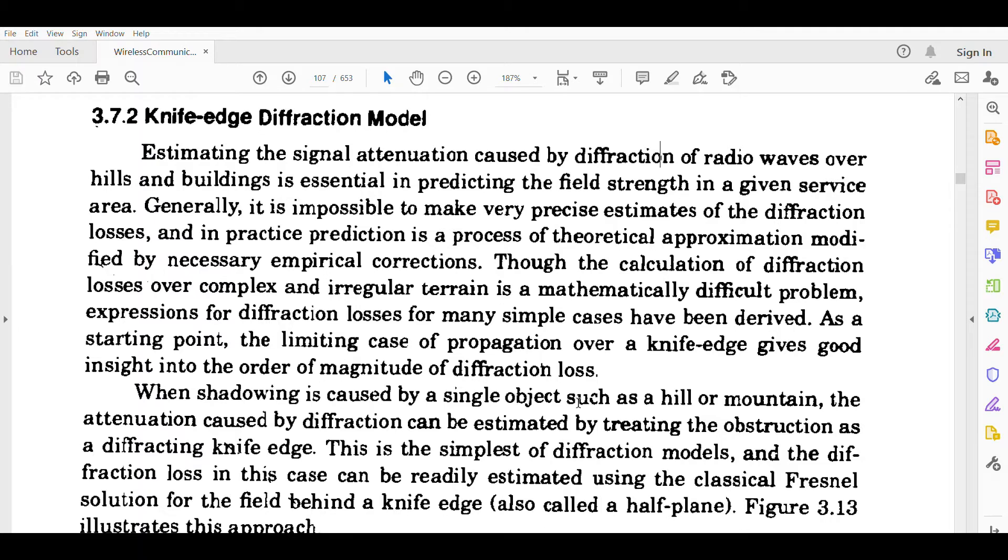When shadowing is caused by a single object such as a hill or mountain, the attenuation caused by diffraction can be estimated by treating the obstruction as a diffracting knife edge. This is the simplest of diffraction models, and the diffraction loss in this case can be readily estimated using the classical Fresnel solution for the field behind a knife edge, also called a half plane.